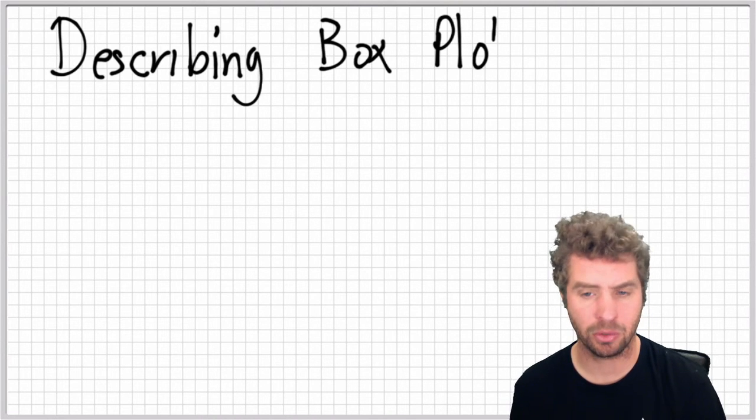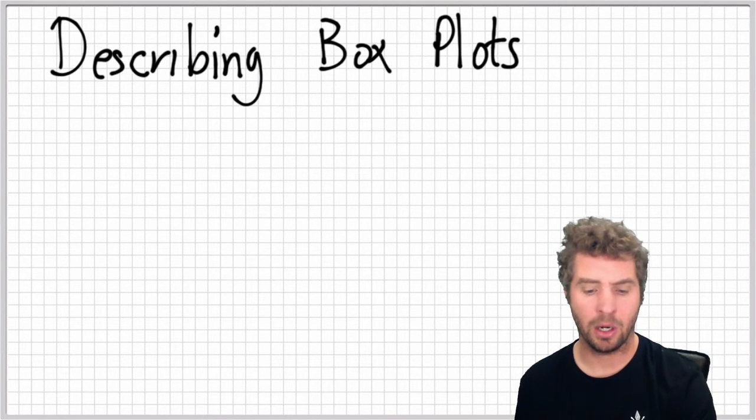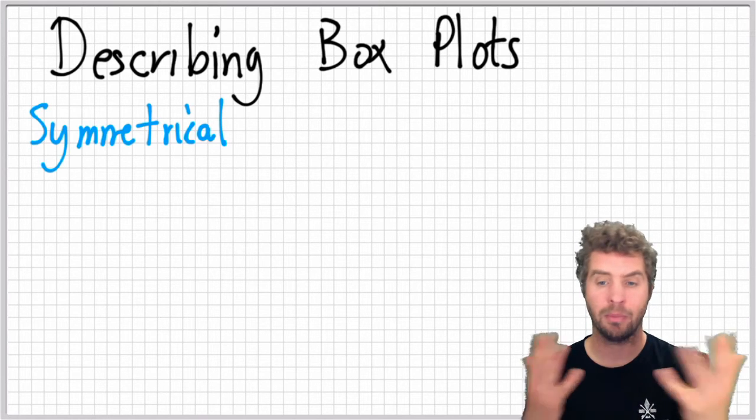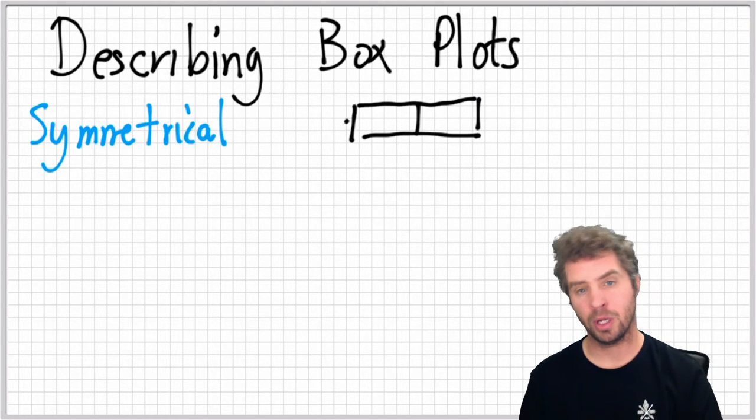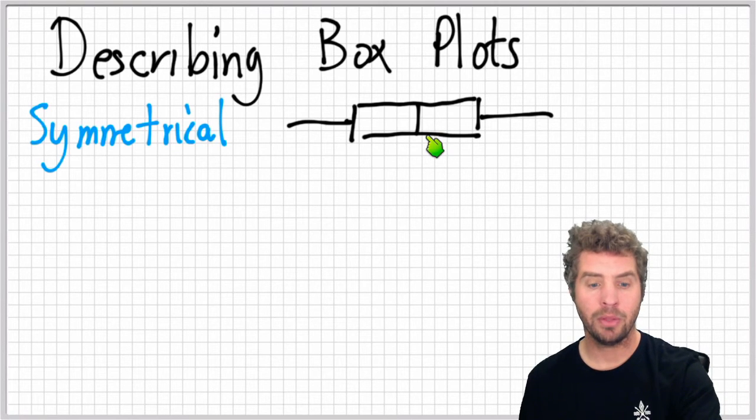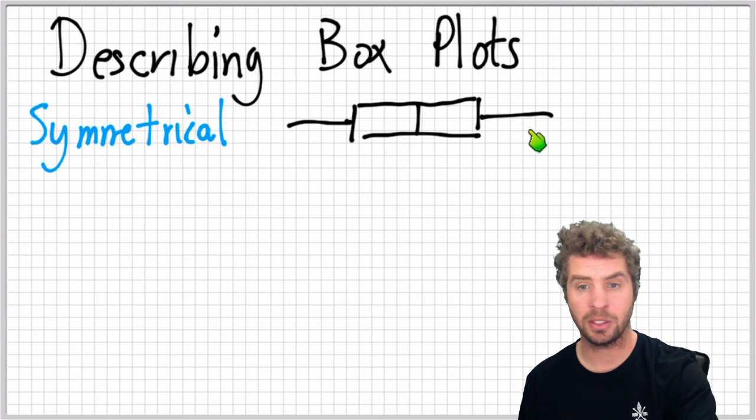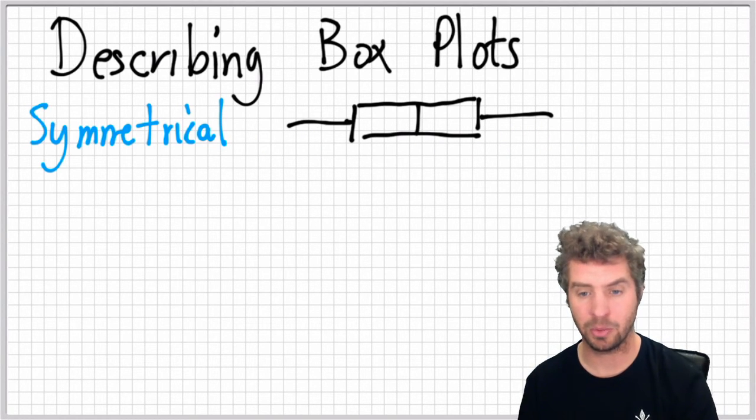So the words that we can use to describe boxplots are the first being symmetrical, which, same thing on both sides. So the median is right in the middle. The space between the median and the quartiles is about the same and the distance out to the min and the max is about the same as well. So symmetrical.